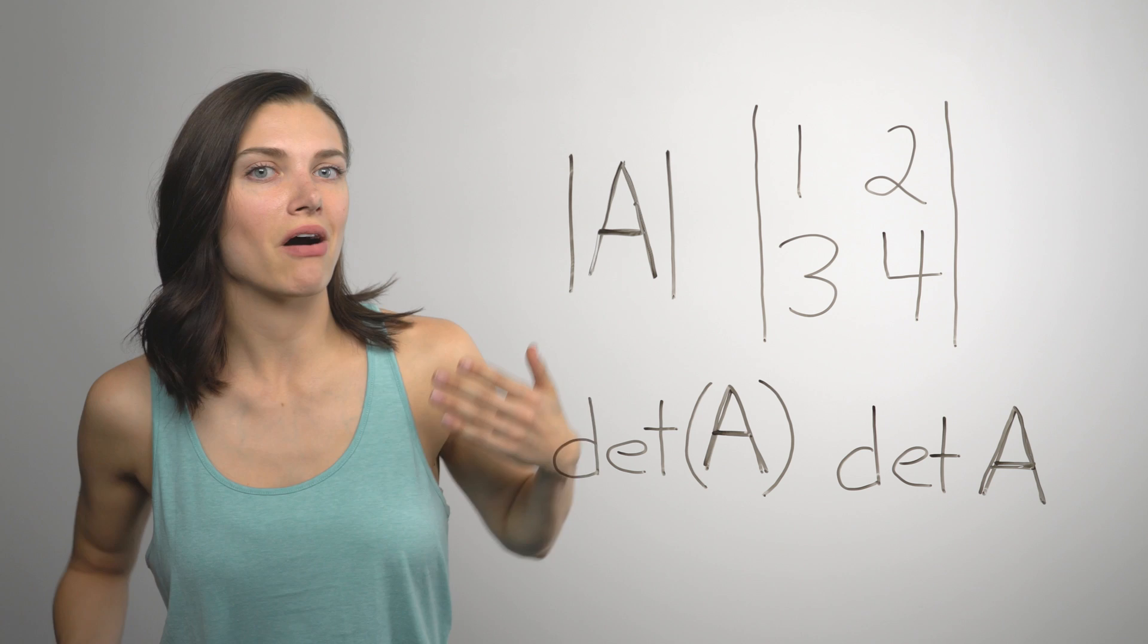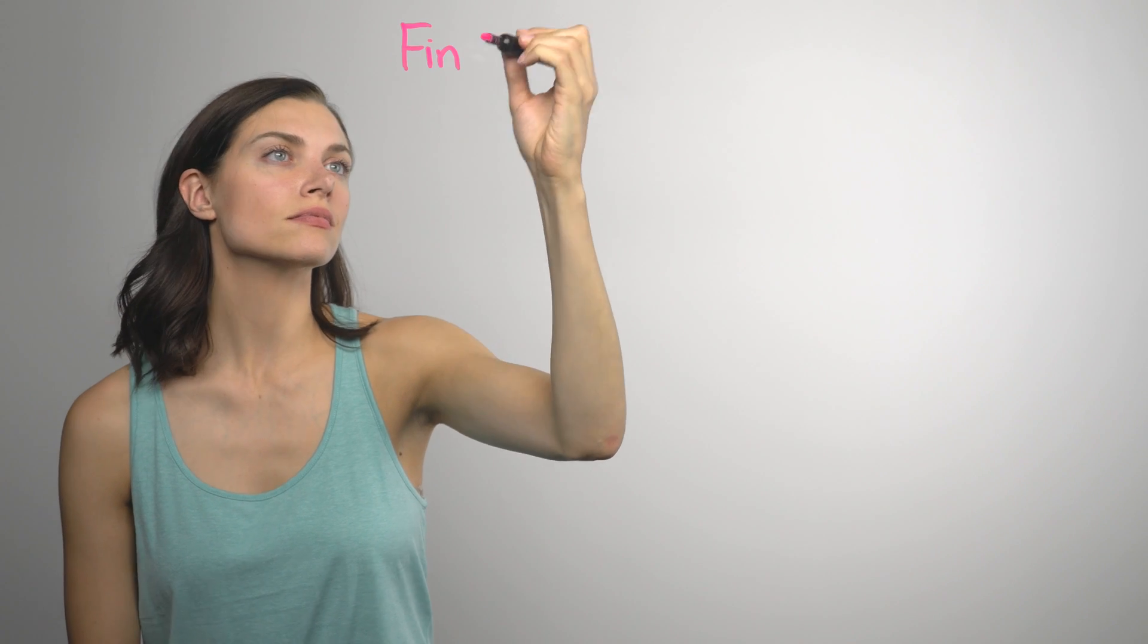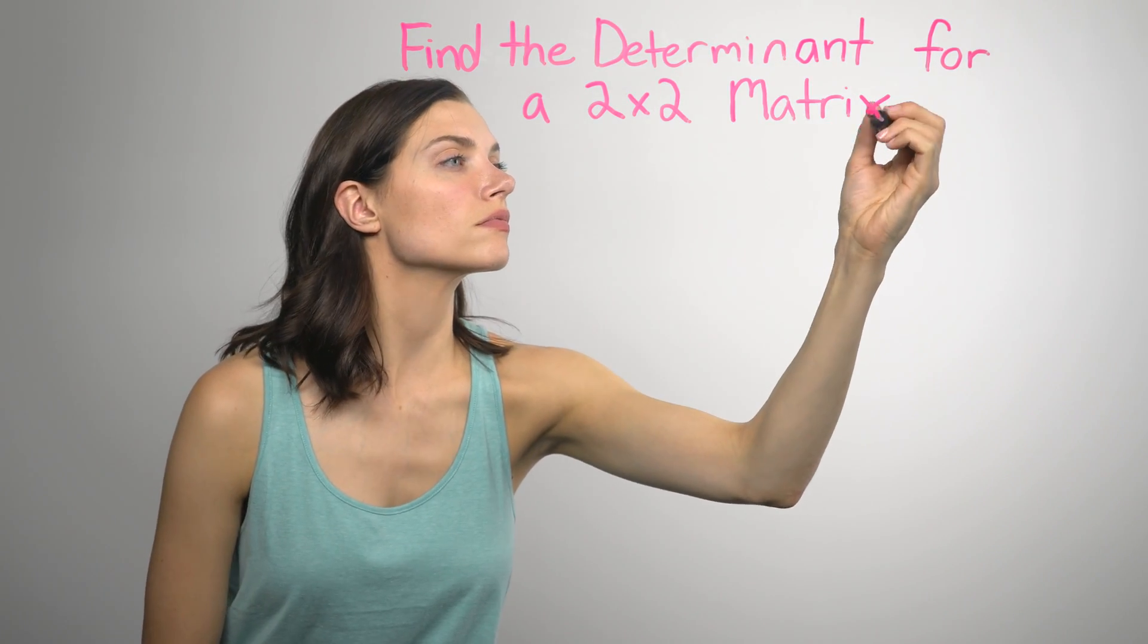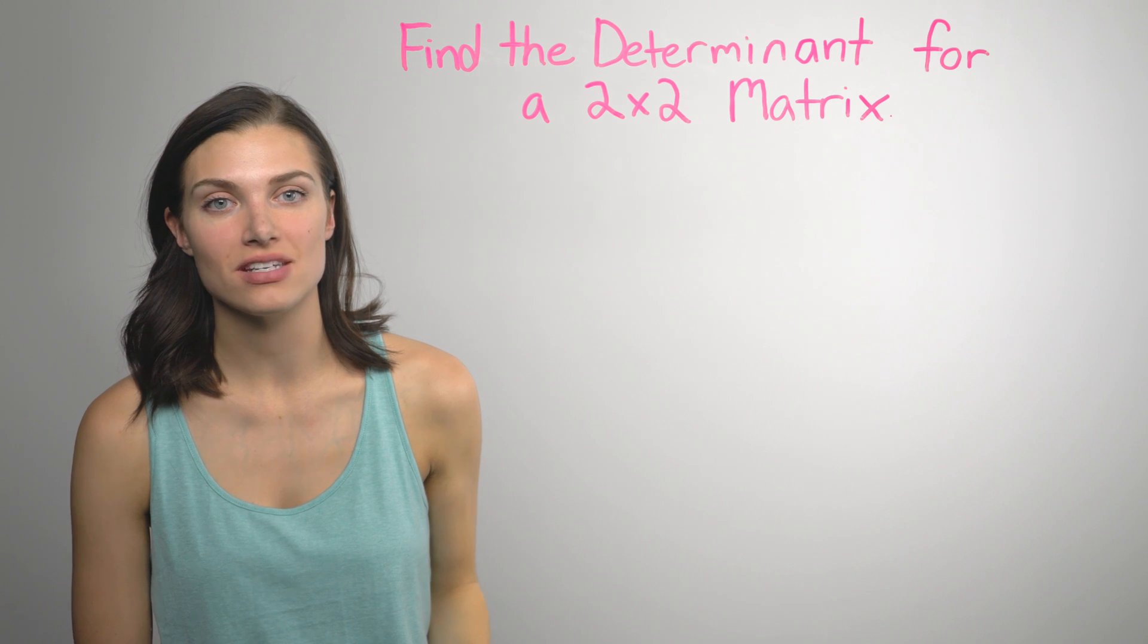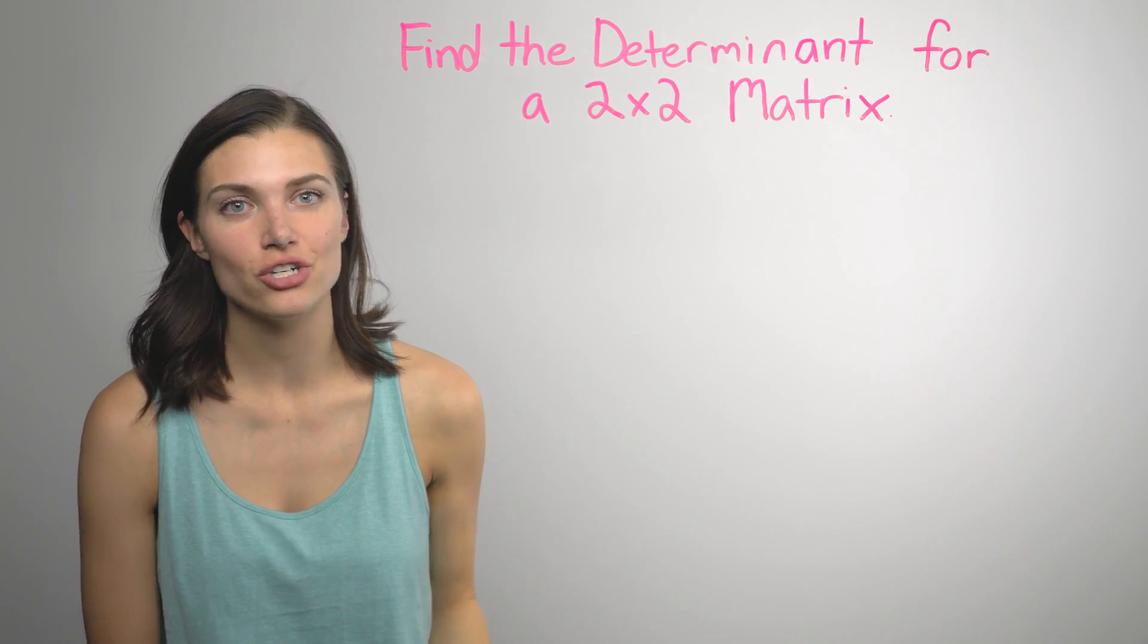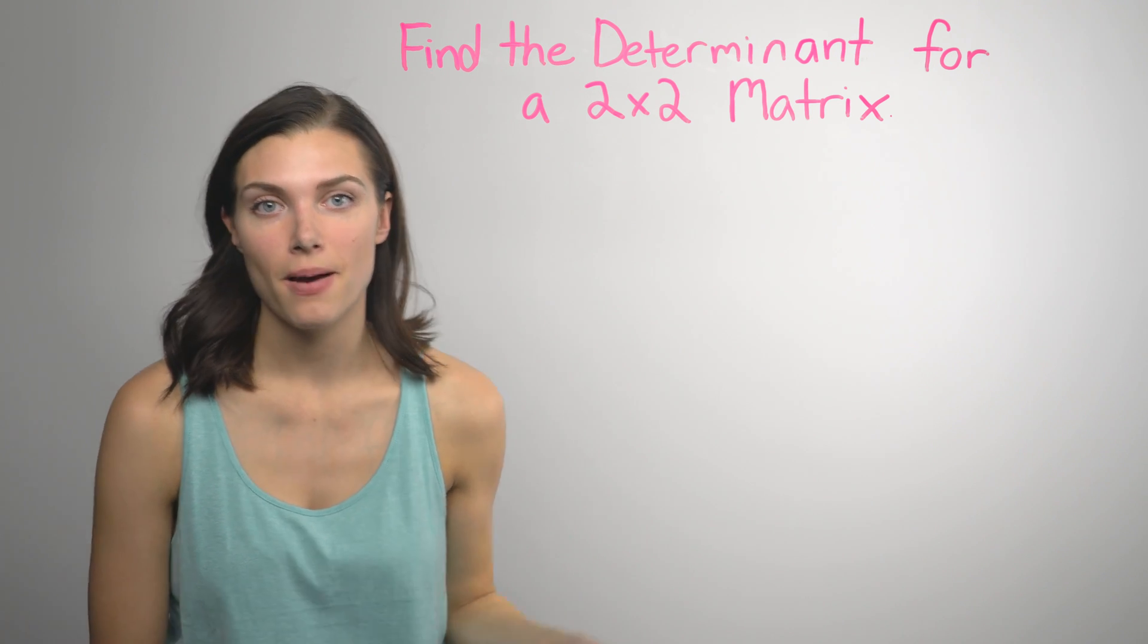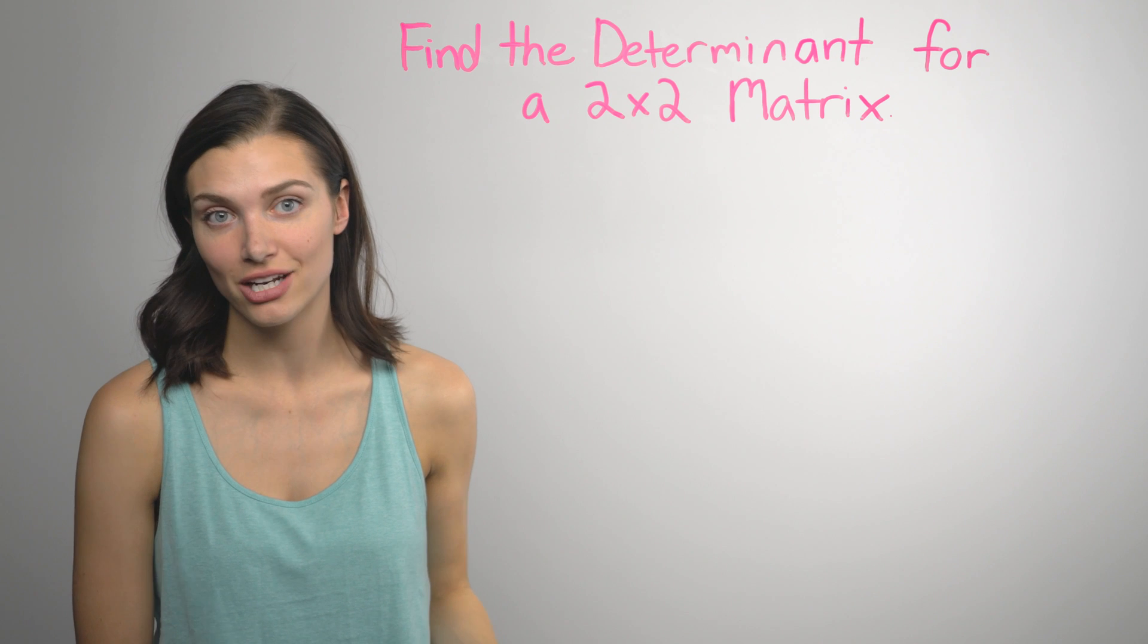Okay, so now how do you actually find the determinant? 2x2 matrices are the easiest matrices to find the determinant for, but what's really important is that you need to know how to do a 2x2 matrix before you can do larger matrices. So, let's see how to do it.